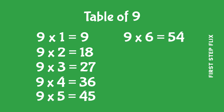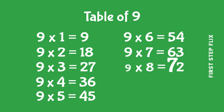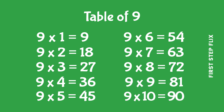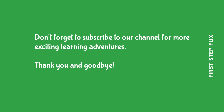Nine sevens are sixty three. Nine eights are seventy two. Nine nines are eighty one. Nine tens are ninety. Don't forget to subscribe to our channel for more exciting learning adventures. Thank you and goodbye.